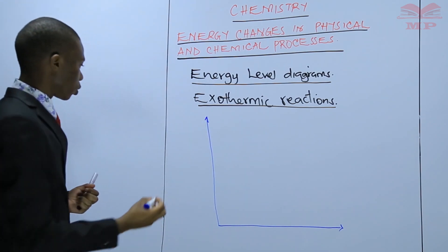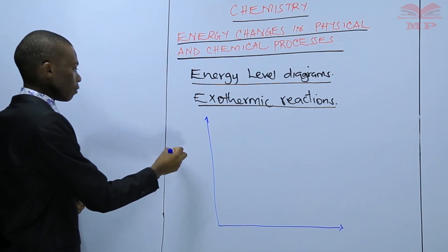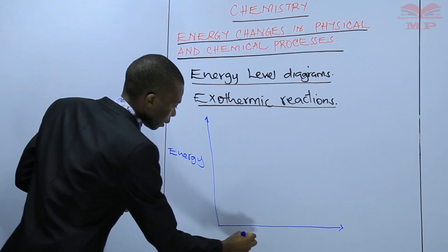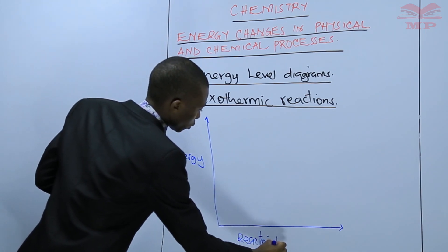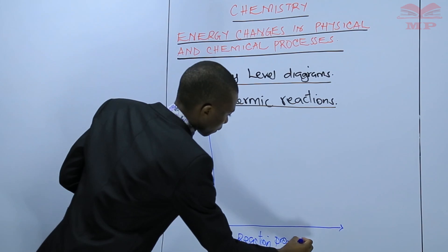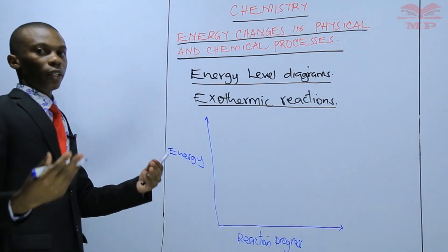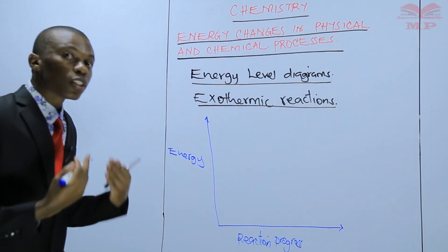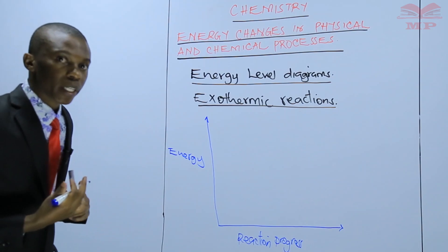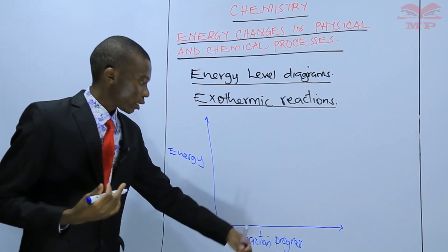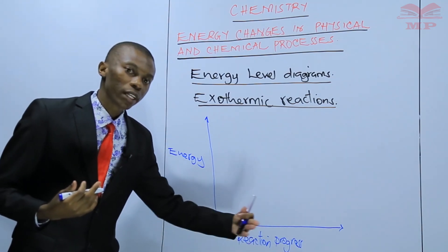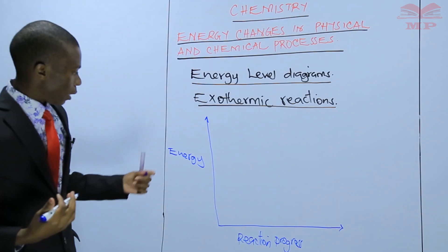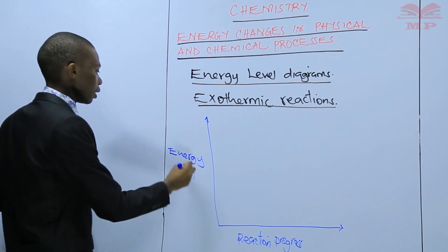Just like we did in endothermic reactions, on the y-axis you have energy, and on the x-axis you have the reaction progress. The reaction in this case is dissolving sodium hydroxide, because this is what we use to demonstrate an exothermic reaction. So the reaction taking place is dissolving sodium hydroxide solid in water, and energy is measured in joules.